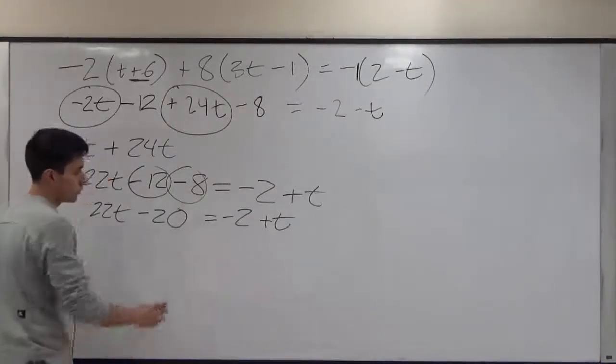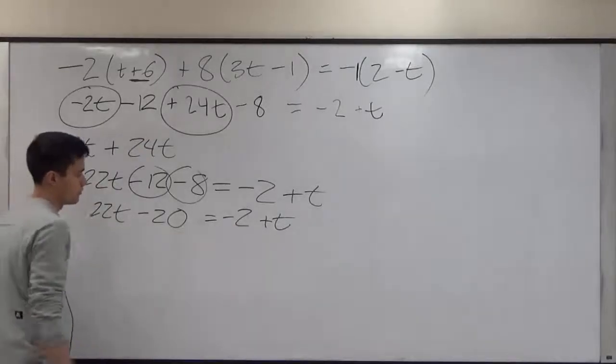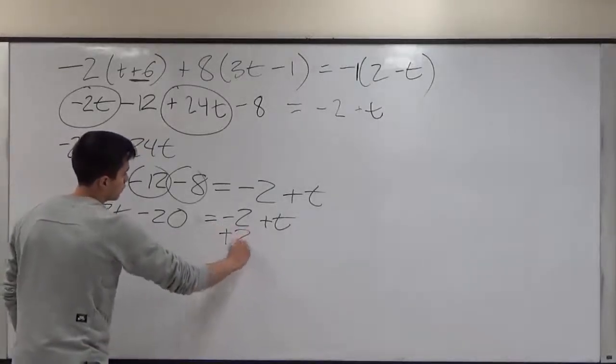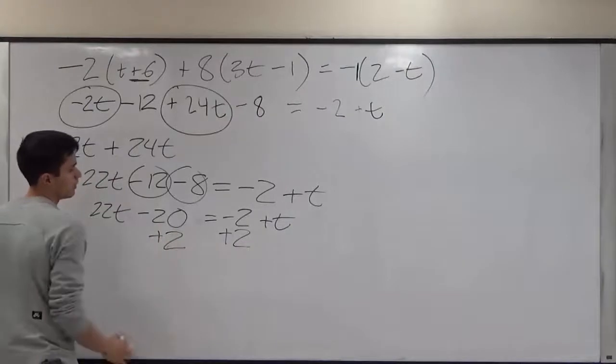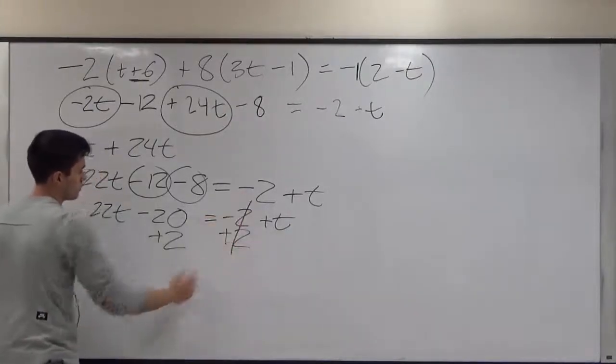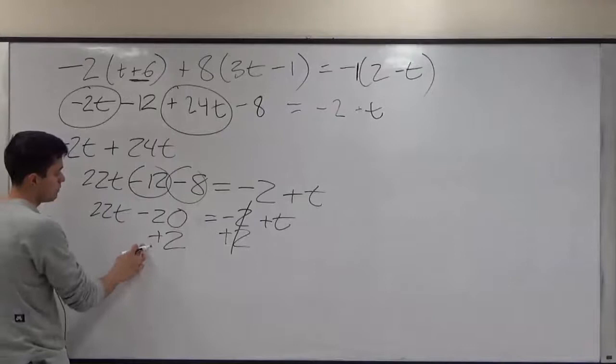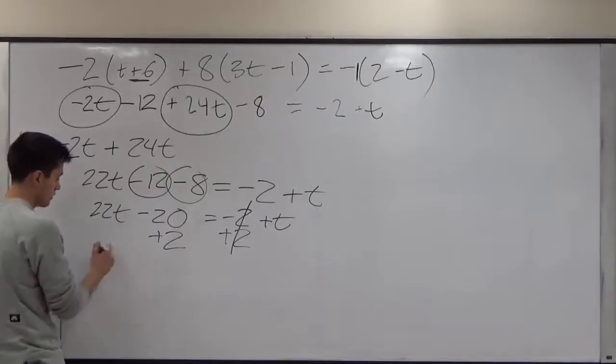So what we do to one side, we must do to the other. Negative 2 plus 2 is 0, so it cancels out. Negative 20 plus 2 would just be negative 18.